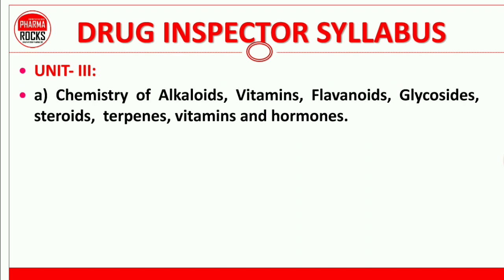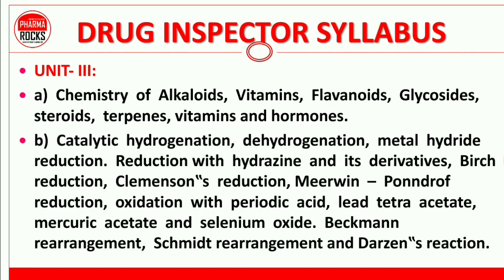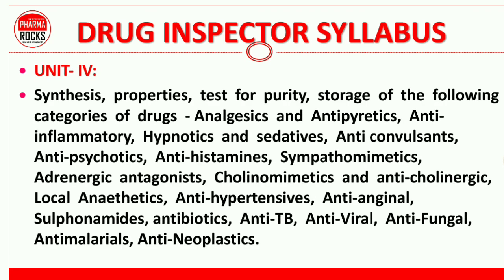Unit 3 is related to the chemistry of alkaloids, vitamins, flavonoids, glycosides, steroids, terpenes, and hormones. Study reactions including catalytic hydrogenation, dehydrogenation, and Beckmann rearrangement. Also study synthesis, properties, tests for purity, and storage for drug categories such as analgesics, antipyretics, anti-inflammatory drugs, hypnotics, and sedatives.